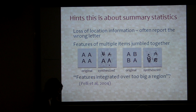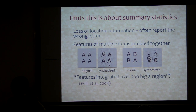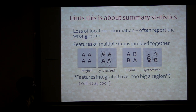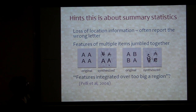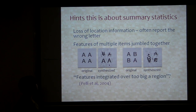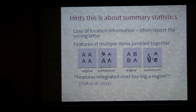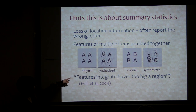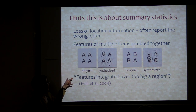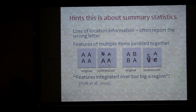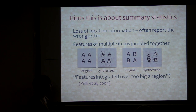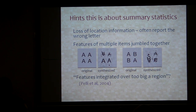Is there evidence for this? We started out looking at crowding, so this is the first thing we want to try and predict. There were hints in the literature before we came along that this might be what was going on. The loss of location information — people often in crowding displays report the wrong letter in an array — had been taken as perhaps evidence that people were doing something statistical. People subjectively report features of multiple items being jumbled together, which is certainly something we would predict.